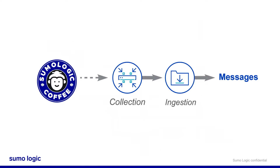Let's say we have a company — in this case we'll use Sumo Logic Coffee, which is an example we use in other classes. Sumo Logic Coffee is collecting and ingesting millions of log messages into Sumo Logic. Typically you can use these messages right away in Sumo Logic apps. But with Cloud SIM Enterprise, your admin is going to need to enable data forwarding and create log mappings, field extraction rules, or complete other pre-processing steps to extract the right data. That's covered in the admin class.